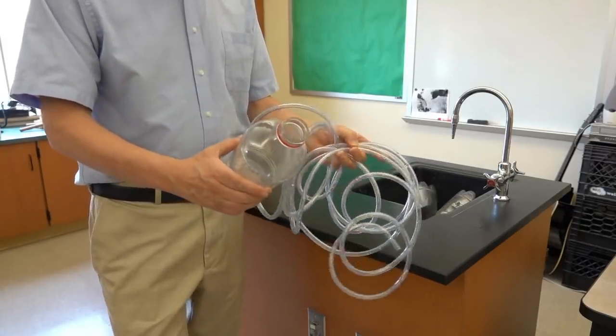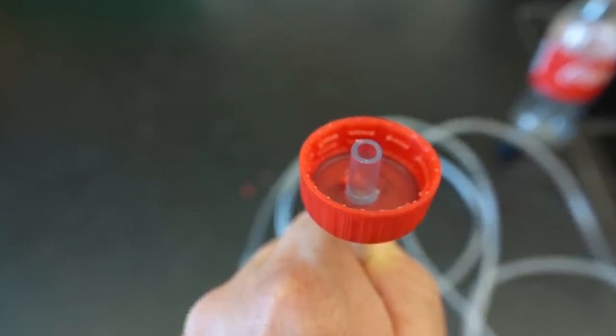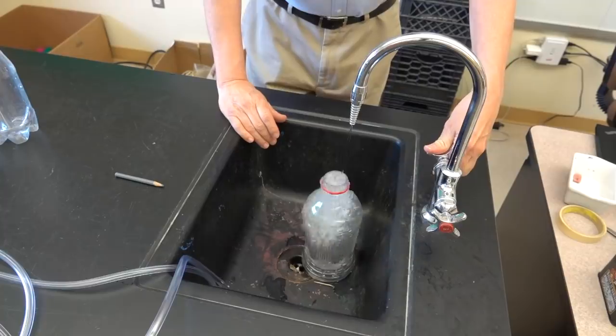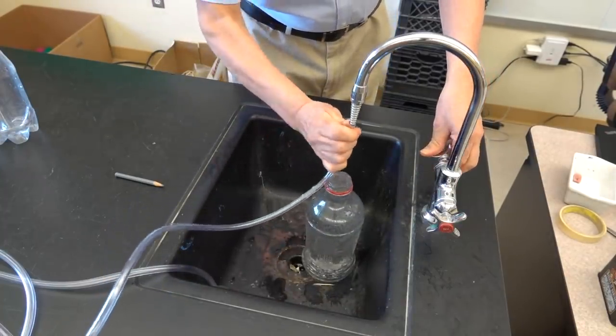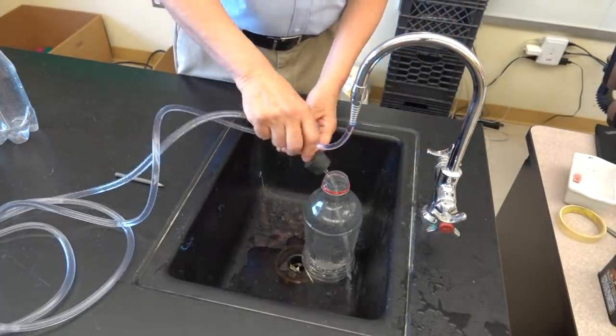This juice bottle is a much tougher plastic. Let's try this one. If you want to try this and you don't have a stopper, you can poke a hole through the cap and stick the hose through it. The bottle needs to be completely filled with water. We also need to fill the hose completely with water and then attach the tube.